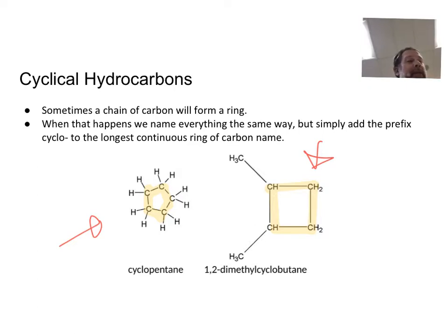We're doing the exact same thing that we've been doing in the past. You count the longest continuous ring of carbon, identify the prefix that would be associated with that longest continuous ring, and then you look for branches and name it as such. So here's examples.